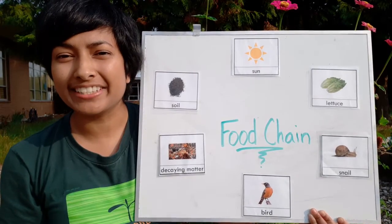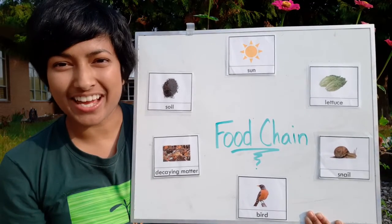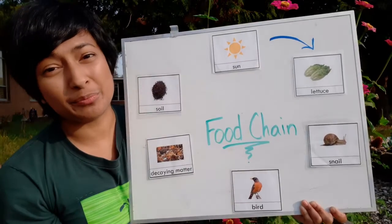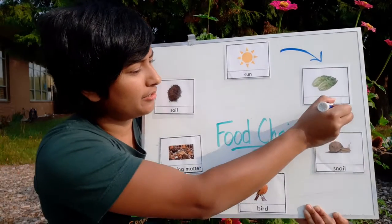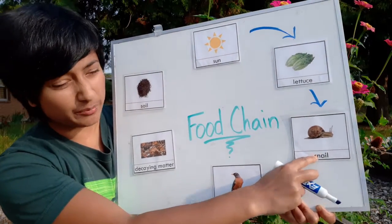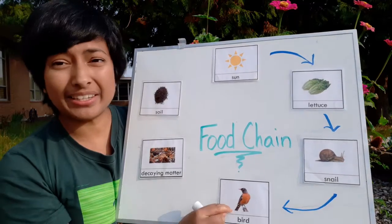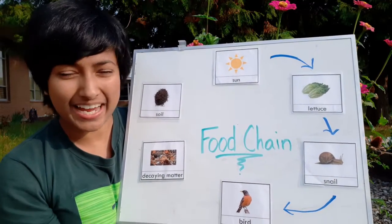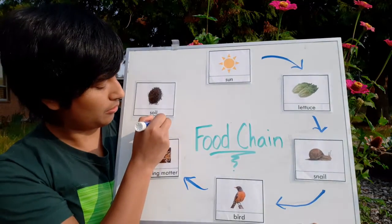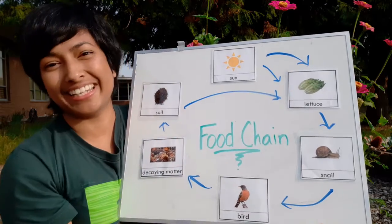All food chains start with the sun. Energy from the sun is transferred to plants. Energy from those plants is transferred to animals that eat them. Energy from those animals is transferred to bigger animals. And when these animals and the plants die, their energy is given back to the soil, and the whole thing starts all over again.